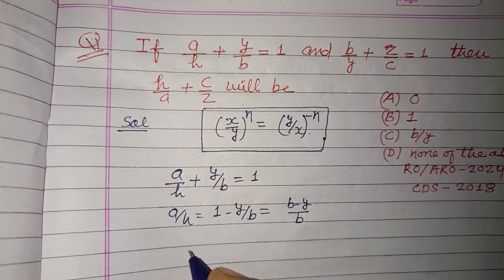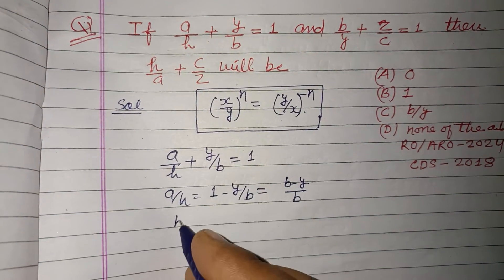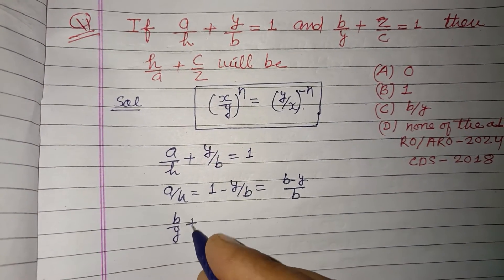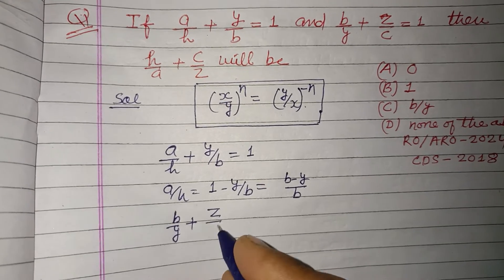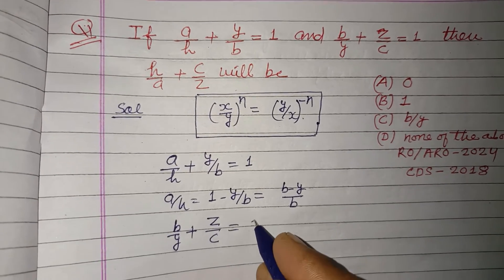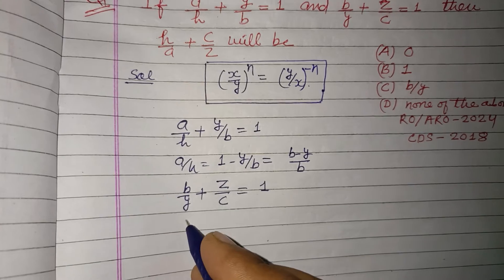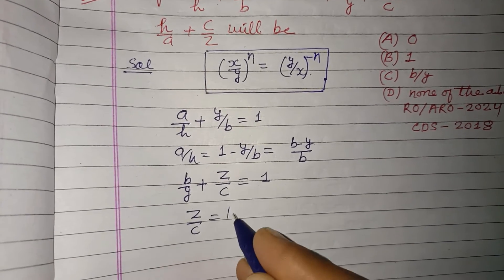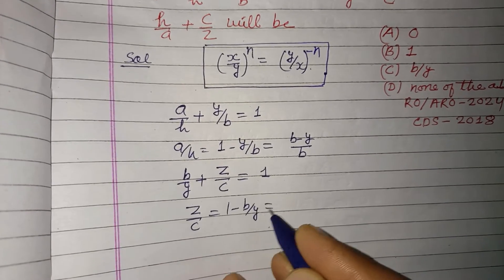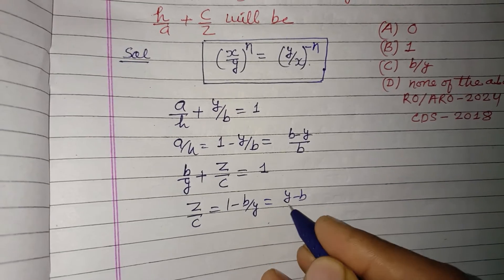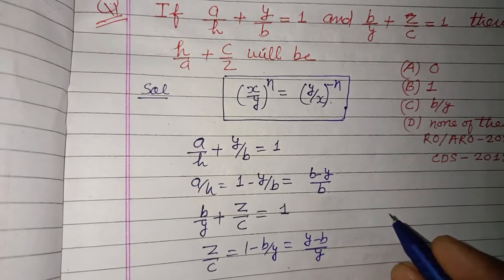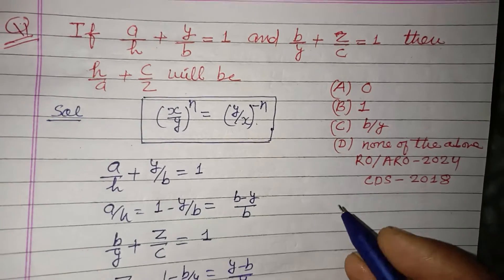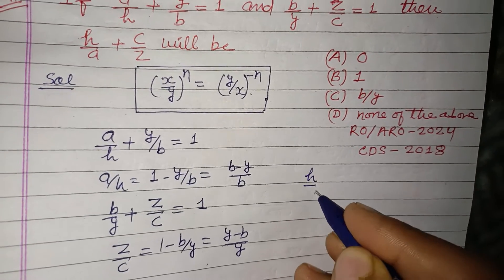And from the second equation, b/y + z/c = 1. So from here, z/c = 1 - b/y, and this will be (y - b)/y. Now we require h/a + c/z, so we write it as (a/h)^(-1) because we reverse it.